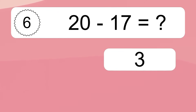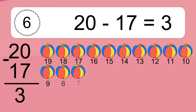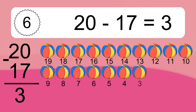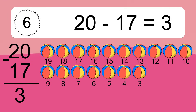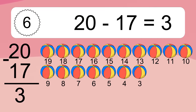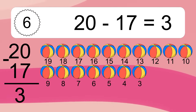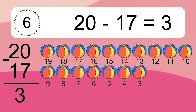20 minus 17 equals what? 20 minus 17 equals 3. Let's count it. 19, 18, 17, 16, 15, 14, 13, 12, 11, 10, 9, 8, 7, 6, 5, 4, 3.